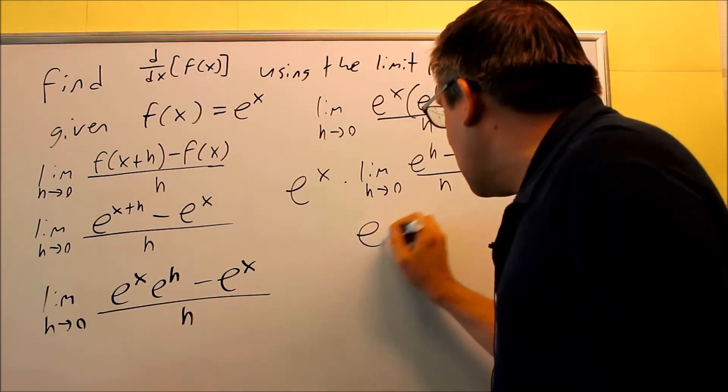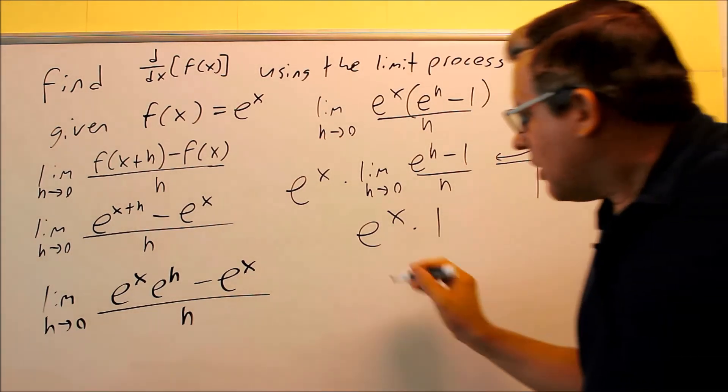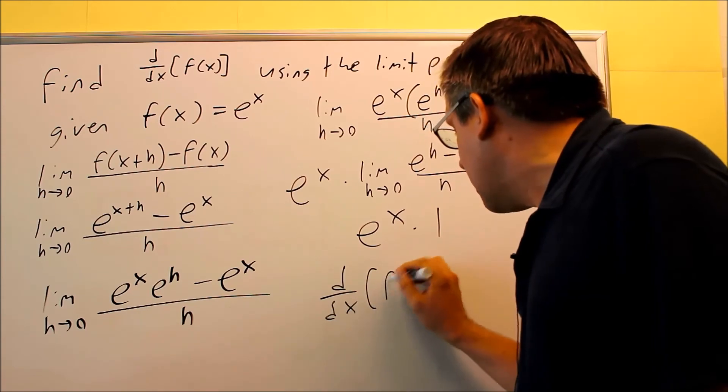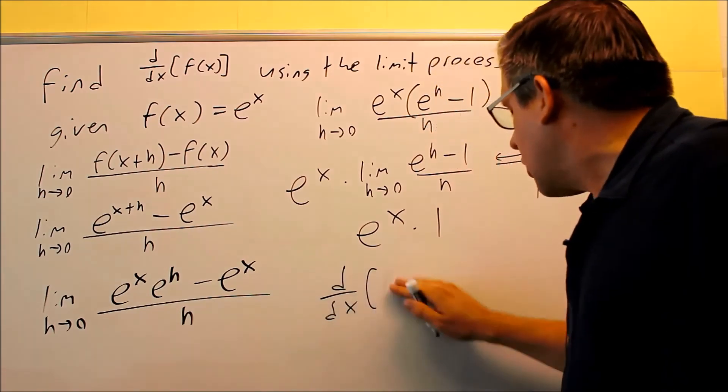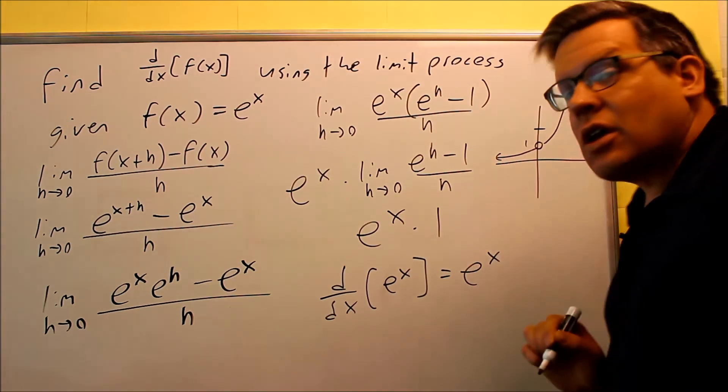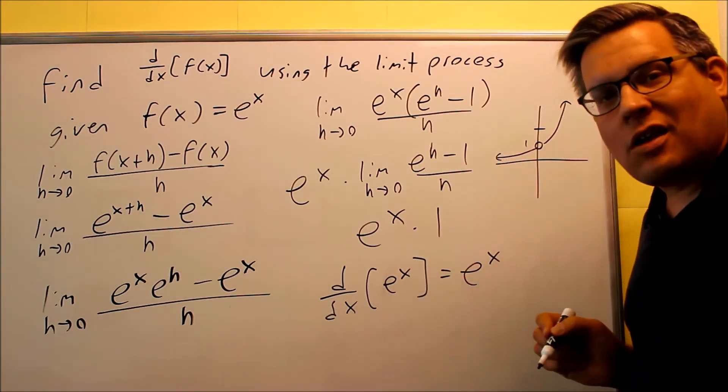So that means I get e to the x times 1, which is e to the x. So what I've done here is my derivative, that's what I just did with this whole limit process. In this case, we'll go ahead and put in e to the x. So kind of an interesting thing happens. The derivative of e to the x ends up being itself.